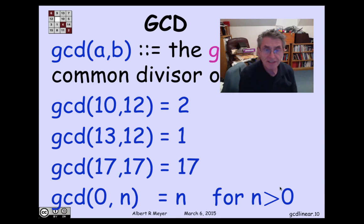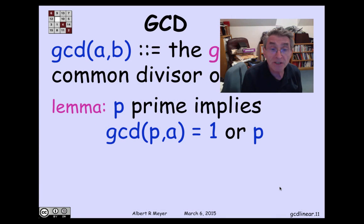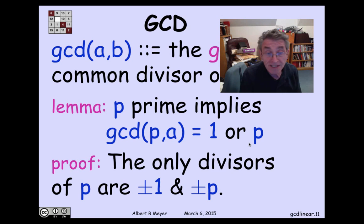One final fact to set things up for the next segment is to think about the GCD of a prime and a number. And it's either 1 or p. The reason is that the only divisors of a prime are plus minus 1 and plus minus p, so if p divides a, the GCD is p, and otherwise, the GCD is 1.